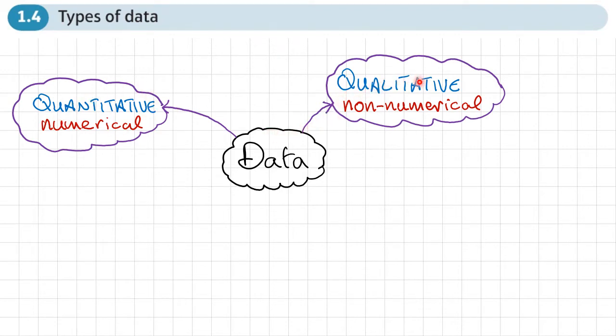Whereas data which is non-numerical, so they may be descriptions, they may be words, they may be letters, is qualitative data.